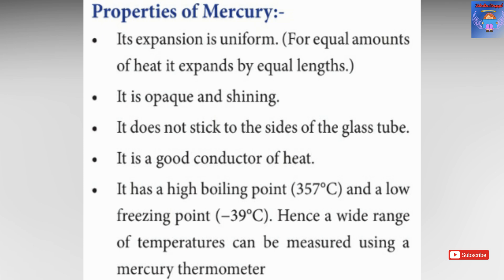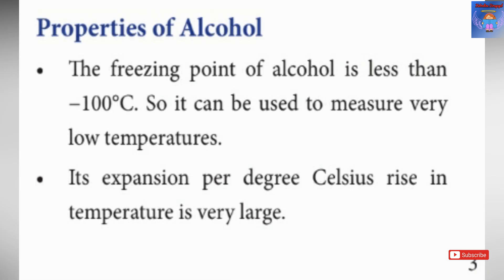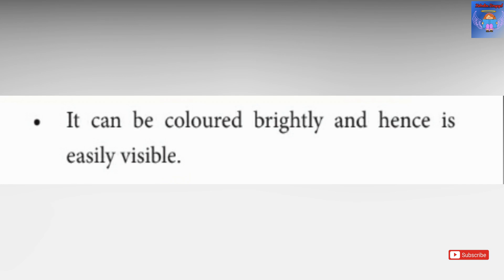The glass tube should be thick so we can handle it safely. The highest boiling temperature of mercury is 357 degrees Celsius and the lowest freezing point is minus 39 degrees Celsius. For alcohol, the main freezing point is minus 100 degrees Celsius, giving a large range. Alcohol is colored, making it easy to read the temperature.